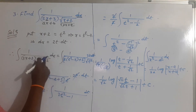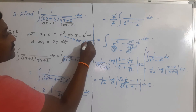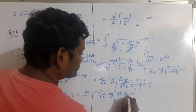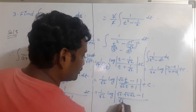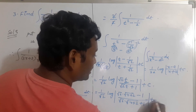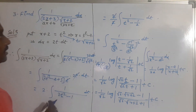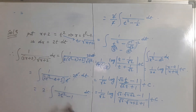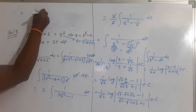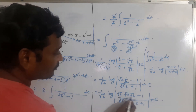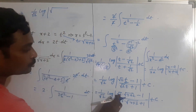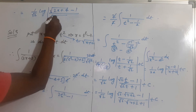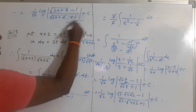Now replace the value of t: t = root over (x + 2). So we get 1 by root 2 times log mod of (root 2 times root over (x + 2) minus 1) by (root 2 times root over (x + 2) plus 1) plus c. Simplifying, root 2 times root over (x + 2) = root over (2x + 4), giving the final answer: 1 by root 2 times log mod (root over (2x + 4) minus 1) by (root over (2x + 4) plus 1) plus c.